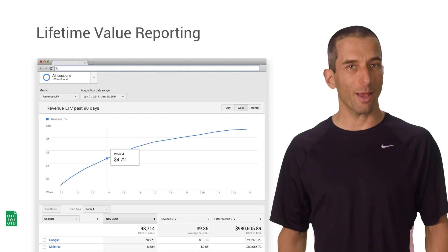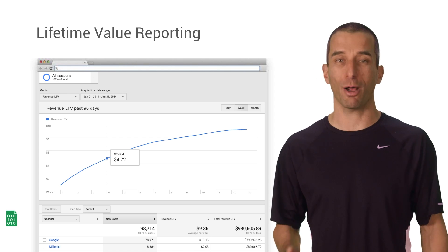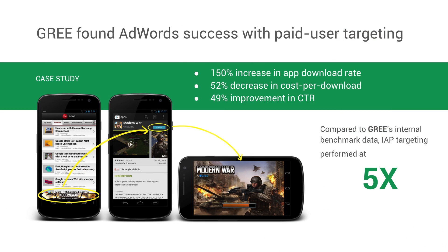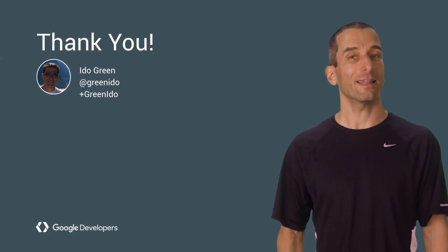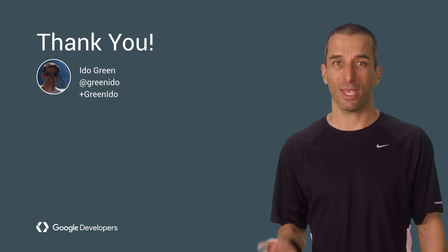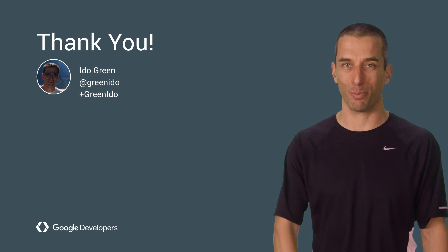So what happens when you combine average revenue per user, lifetime value, and our new API? A developer called Grie tried just that and ended up seeing a five times improvement to their monetization. On the next episode, we will see how to make money in games. Until next time: eat your vegetables, increase your users' lifetime value, and listen to your partner.